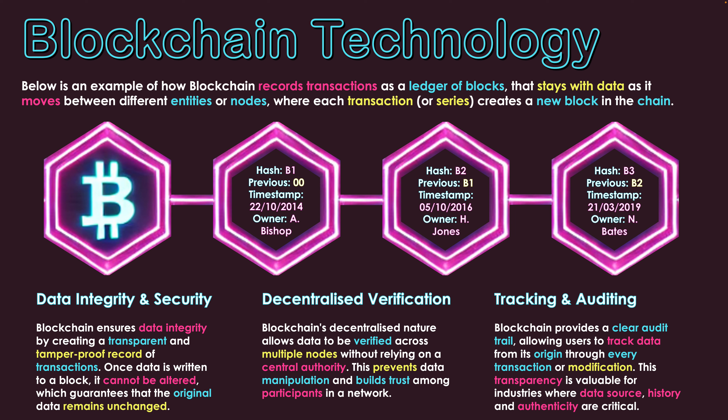In summary, blockchain is a system where records are locked in as blocks every time transactions are made, and that history of records moves around with whatever product is using blockchain technology. It is cryptographically stored, so data is locked in once recorded, supporting data integrity and security. It moves with the data, enabling decentralized verification across different network nodes. And it supports tracking and auditing, allowing us to verify the history of a product and ensure we're getting something legitimate and of value.